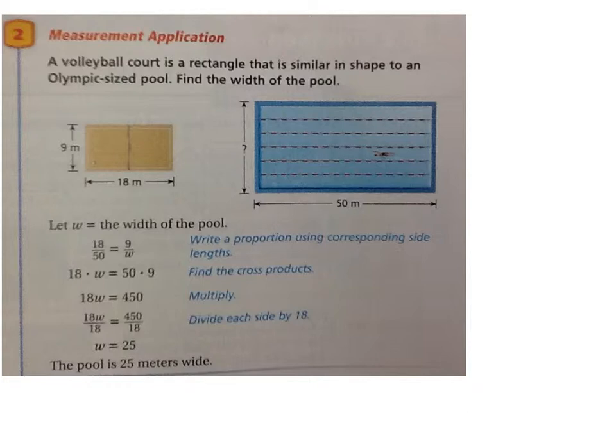Here we go. A volleyball court is a rectangle that is similar in shape to an Olympic-sized pool. So, a volleyball court is similar in shape to an Olympic-sized pool. Find the width of the pool. So, I'm wanting this right here. I'm just going to say that this is X. Oh, just kidding. They told us that they want what to stand for the width? W. Which makes sense. W for width.